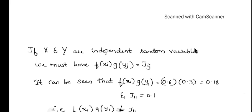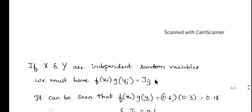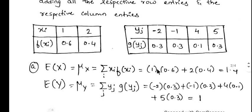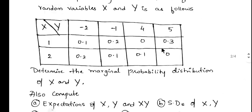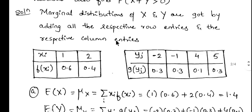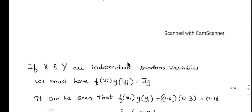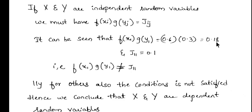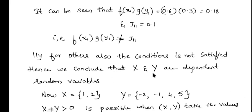Next we will find whether x and y are independent random variables. According to the definition of independent random variables, f(xi) times g(yj) must equal f(i,j). We check: f(x1) times g(y1) = 0.6 times 0.3 = 0.18, but f(1,1) = 0.1. Since 0.18 is not equal to 0.1, we conclude that x and y are dependent.